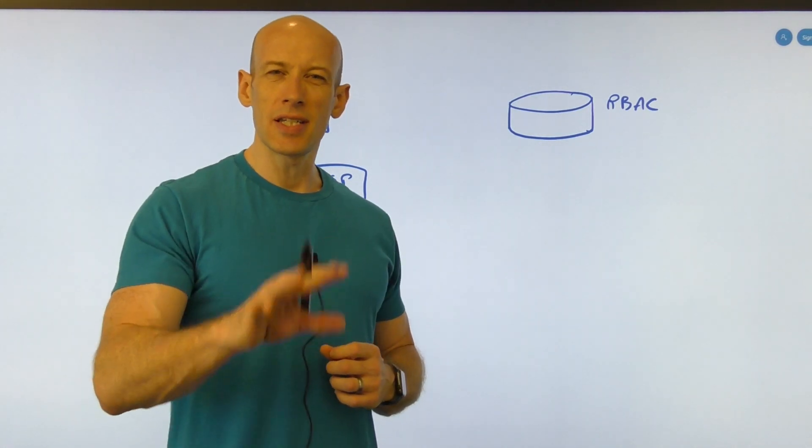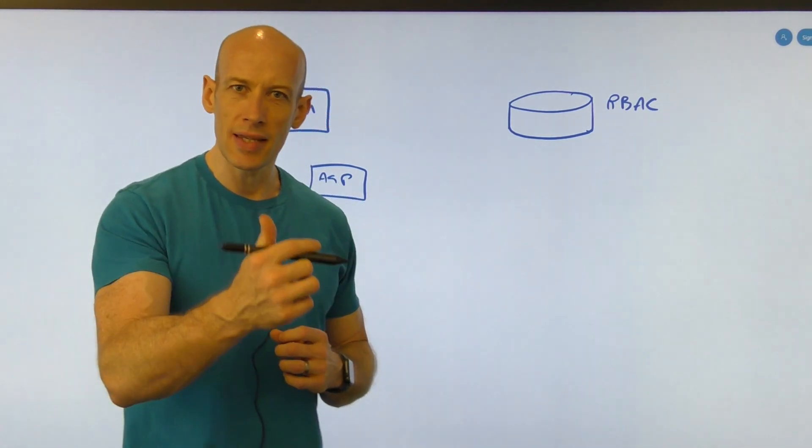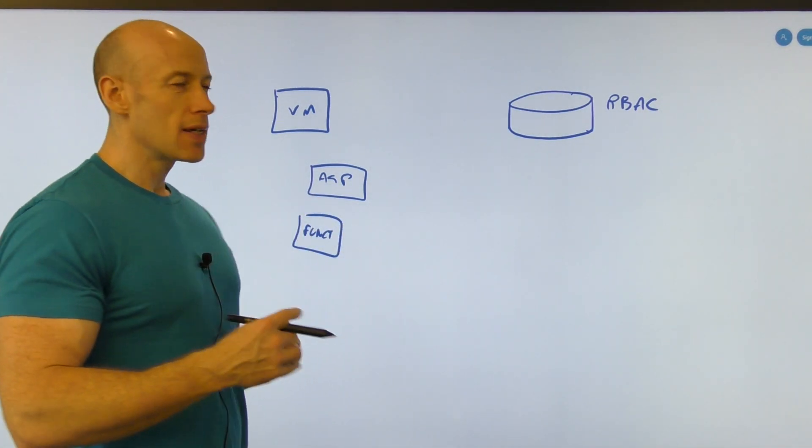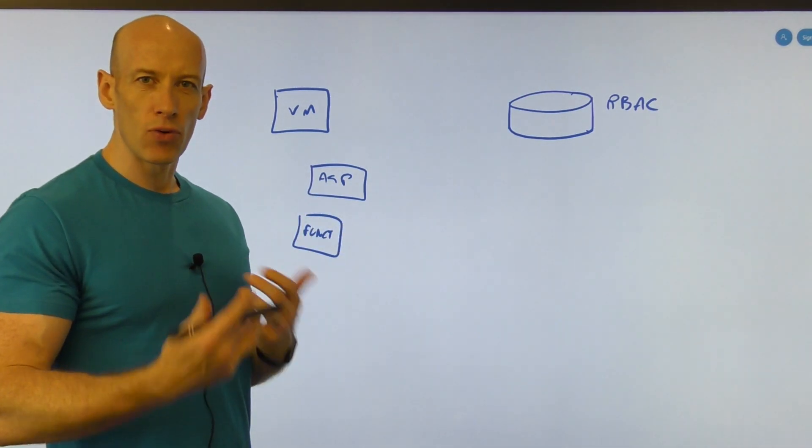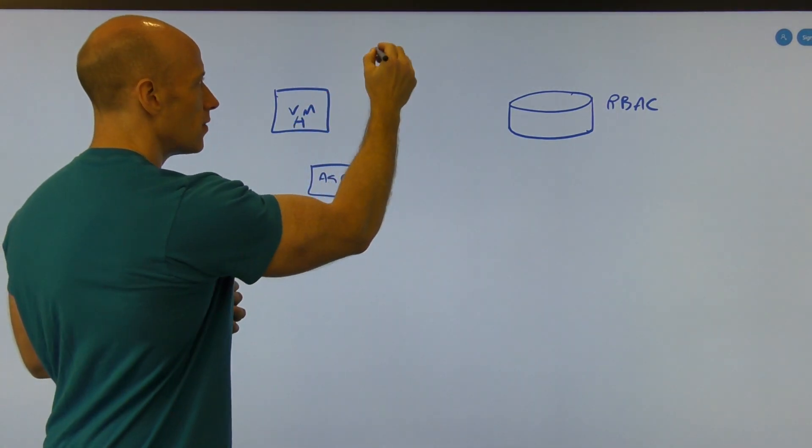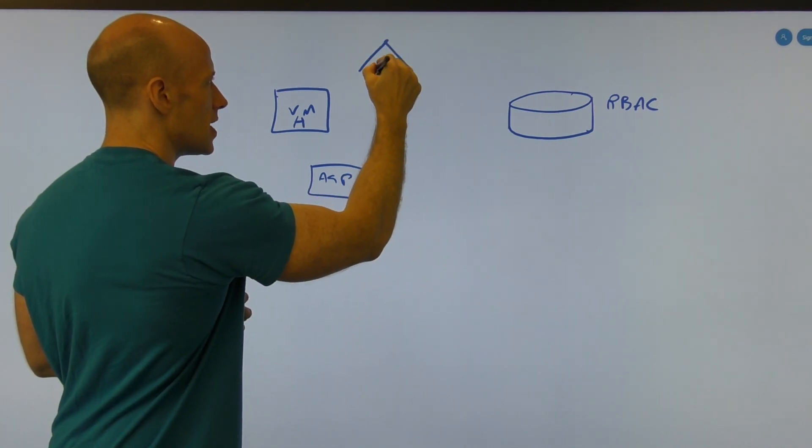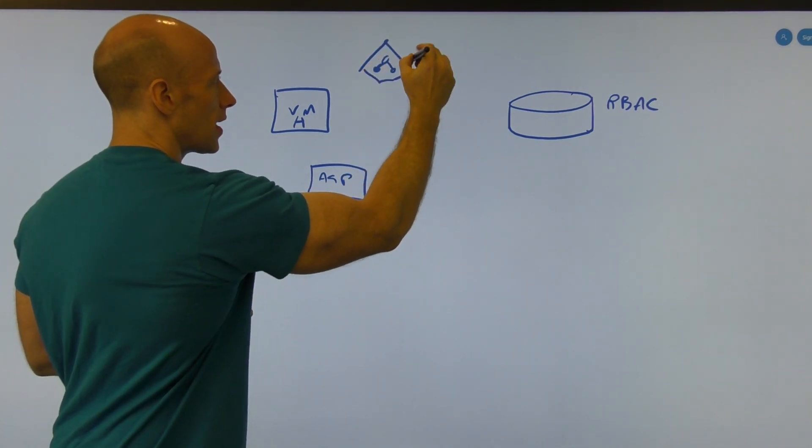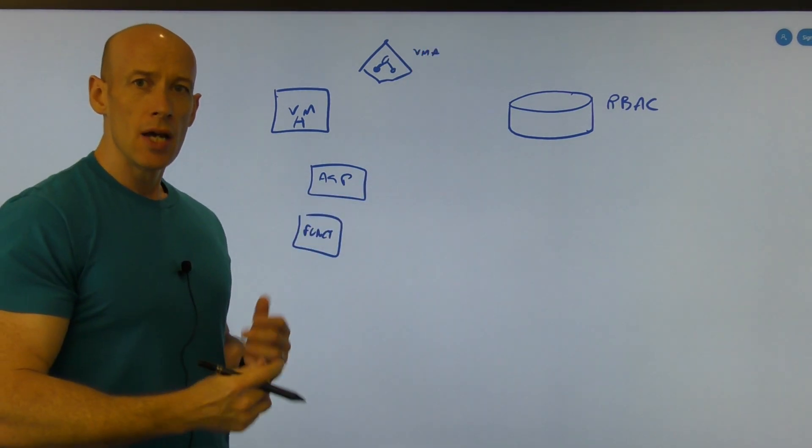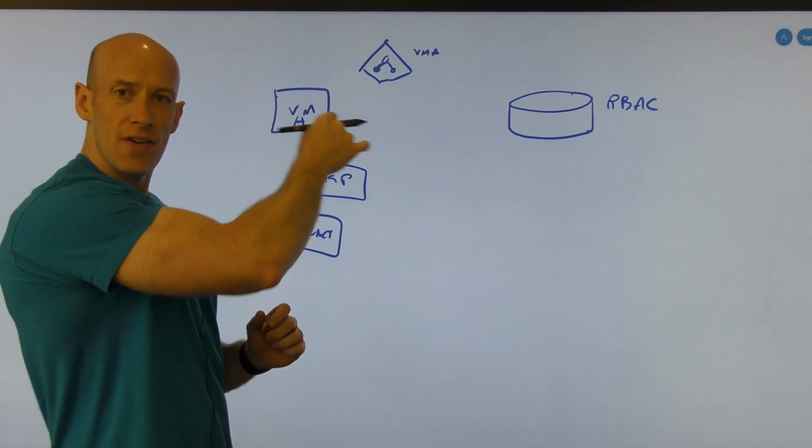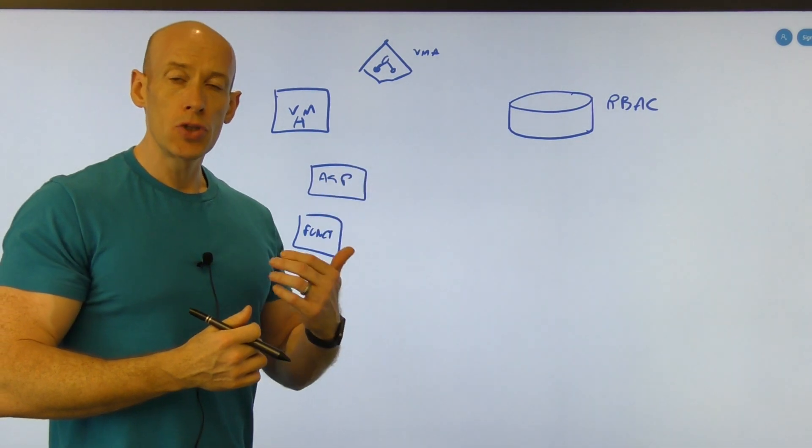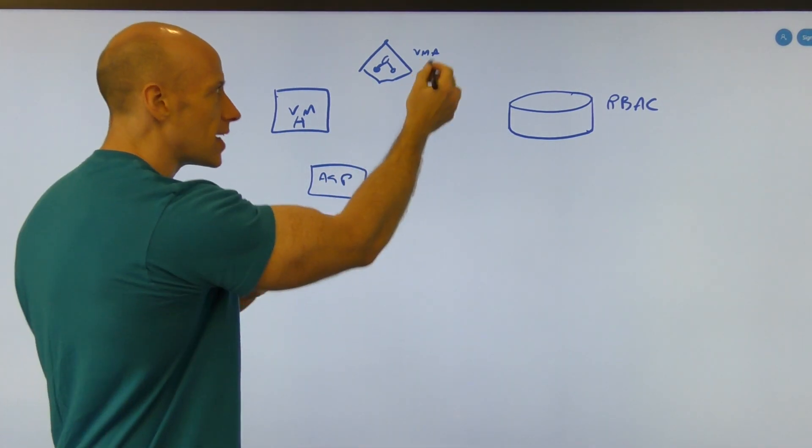And the idea behind this is all of the compute resources in Azure can have this managed identity enabled for it. So essentially, this VMA, there is actually kind of in the Azure AD, I can have this security principle that represents VMA.